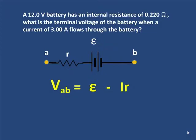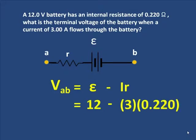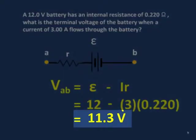Well, E is given to me. There it is—it is a 12 volt battery. That's what it's rated as. That is the EMF. Minus, well there is the current, 3, and the internal resistance, 0.220. I simply pull out a calculator and do a very simple calculation, and the terminal voltage is 11.3 volts.